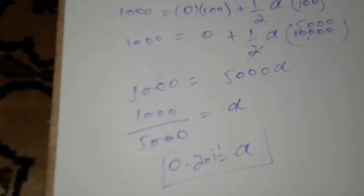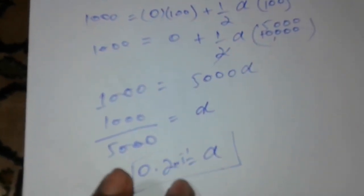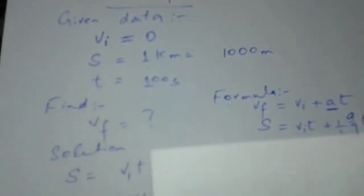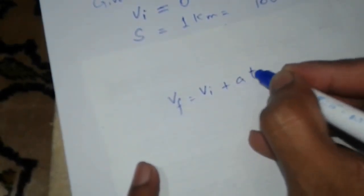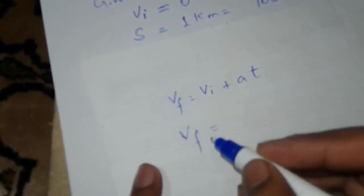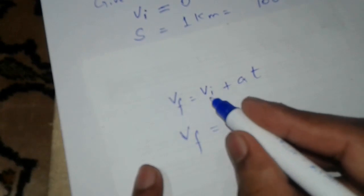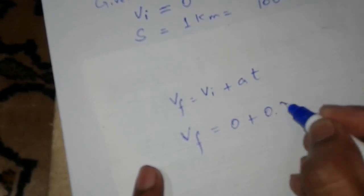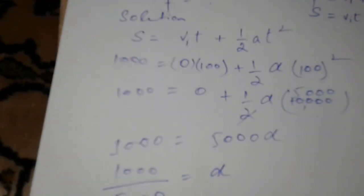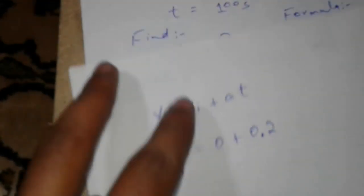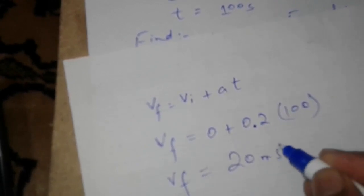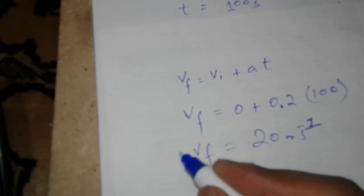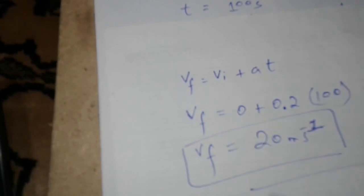Now we find the final velocity by putting the values into the first equation of motion: vf equals vi plus a times t. Initial velocity vi is zero, acceleration a is 0.2 meters per second squared, and time t is 100 seconds. So vf equals 0 plus 0.2 times 100, which equals 20. The final velocity is 20 meters per second.